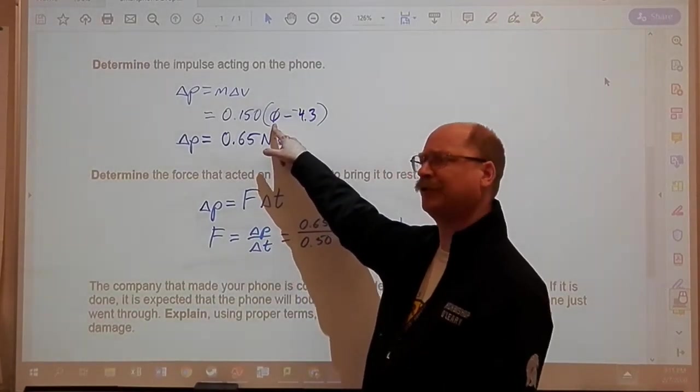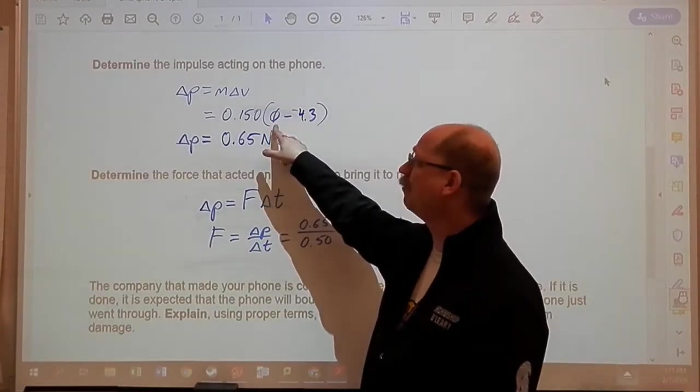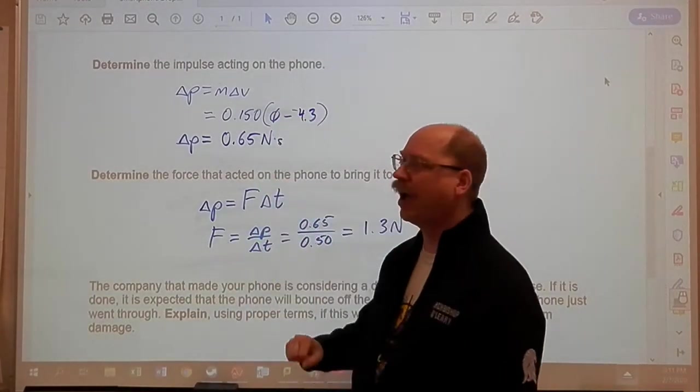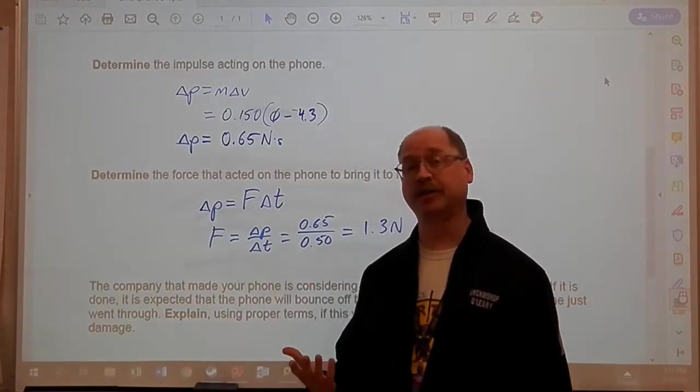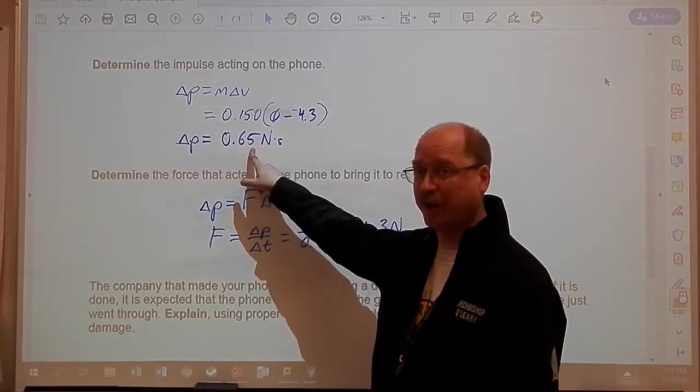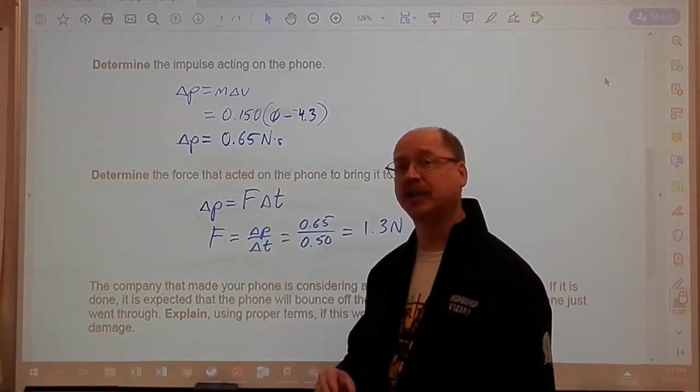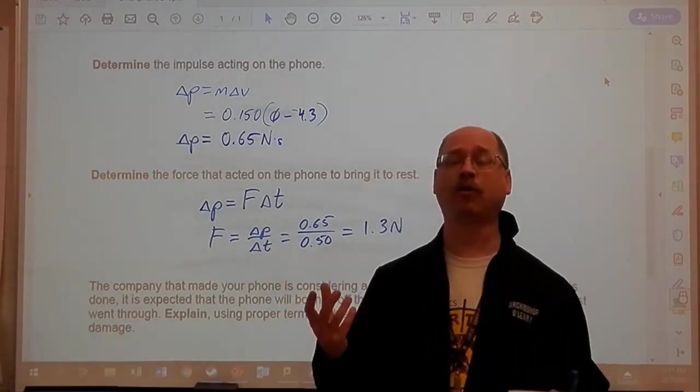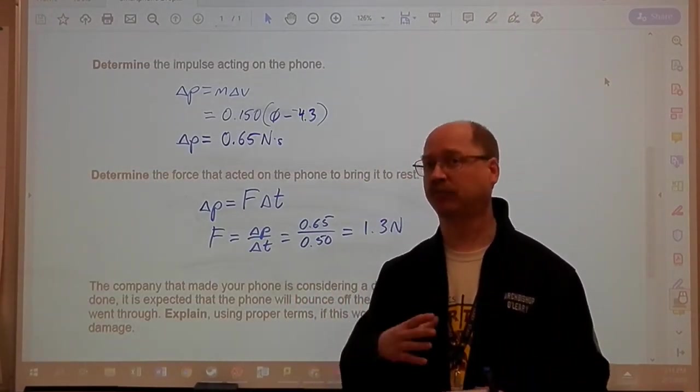But any number there that's not zero is going to make this part in the brackets a bigger positive number. Times that makes this bigger. It's going to be more impulse. It takes more impulse to stop it and throw it back up than just stopping it alone.